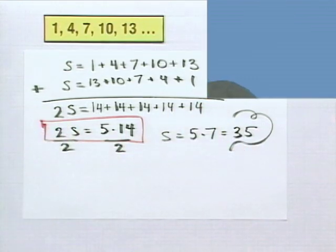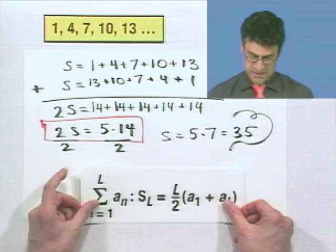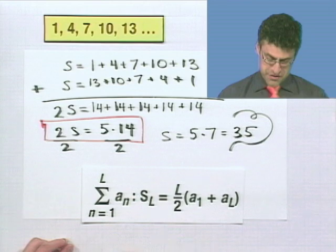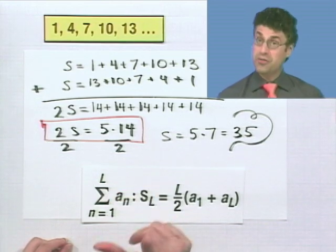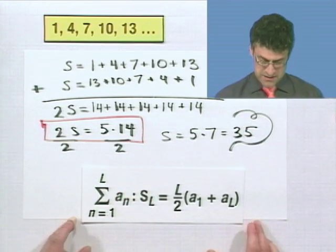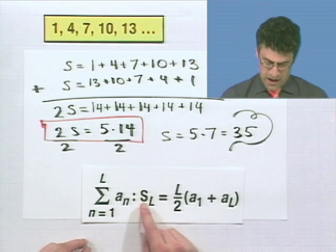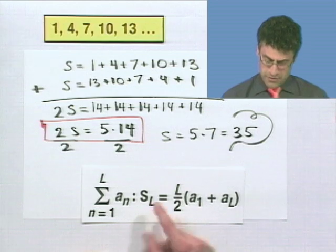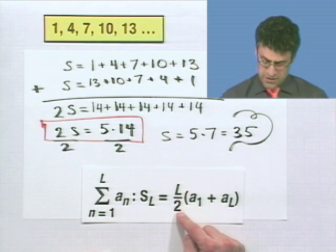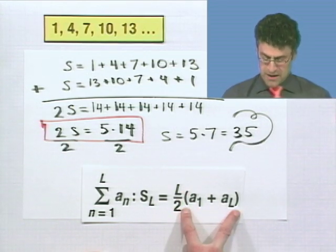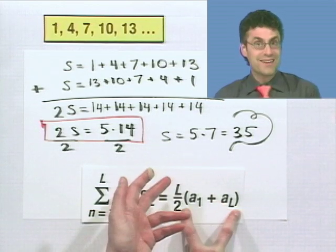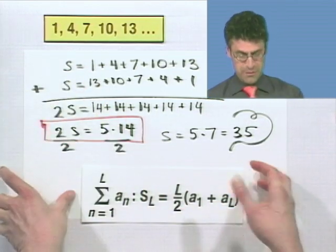So the formula, now here's the really fancy way of writing it, if you want to sum up the first L terms in an arithmetic progression, arithmetic sequence, only works for arithmetic sequences, then that sum, which I call S_L, meaning the sum of the first L terms, is equal to how many terms you have divided by 2 multiplied by the sum of the first and the last term. And that's it. And you can see how Young Gauss came up with it here.